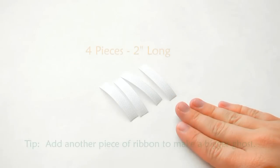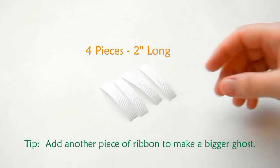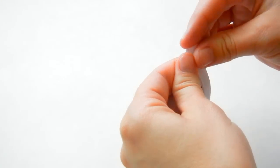Our first step is to cut our white ribbon to two inches long, and we want four pieces. Once you cut them, let's just stack them on top of each other.